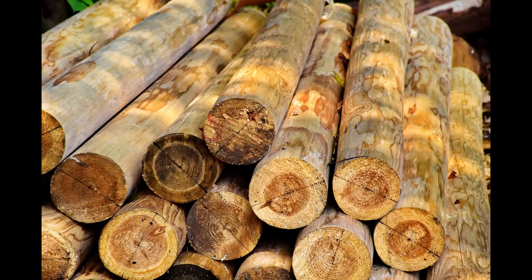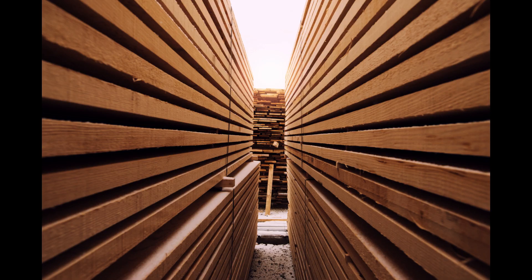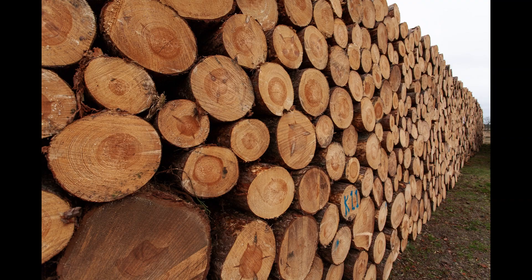The main regulations that apply to wood and timber imports are the EU Timber Regulation, EUTR. The EUTR requires all wood and timber products imported into the EU to be accompanied by a legally compliant chain of custody document. This document ensures that the wood has been harvested and transported in a sustainable manner.